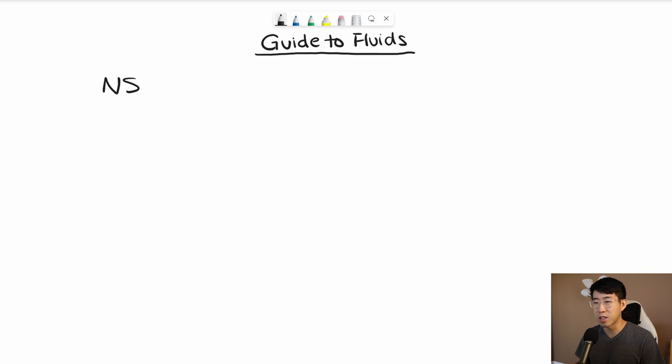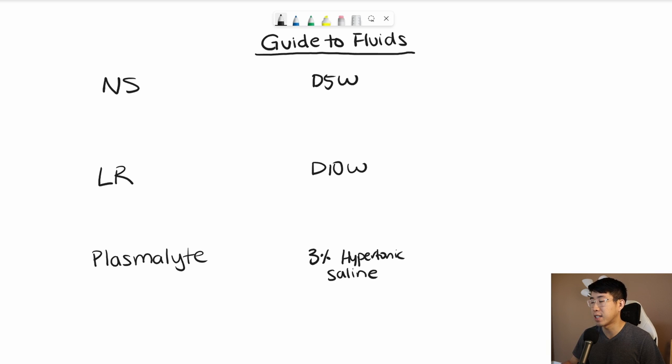The first one is going to be normal saline and then they're going to probably say lactated ringers. Some people at this point might even say something like plasmalite. Then there's D5 water, D10 water, and then there's 3% hypertonic saline. And then you also have things like half normal saline or D5 half normal saline or D5 lactated ringers or D5 half LR.